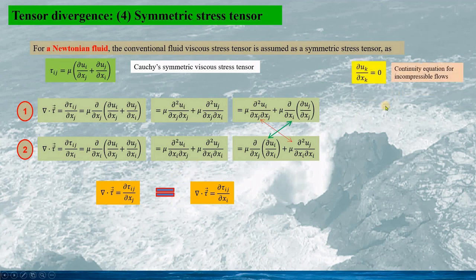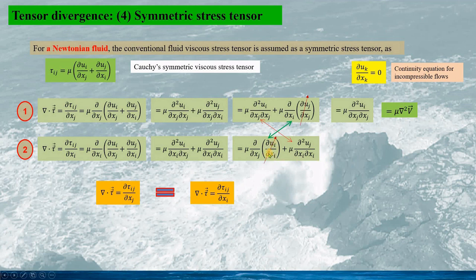Applying the continuity equation for incompressible flow, certain terms become zero, simplifying the first expression to the final form shown. The same applies to the second expression — the corresponding term becomes zero — and writing it in vector form, we can see both expressions are the same for incompressible flow.